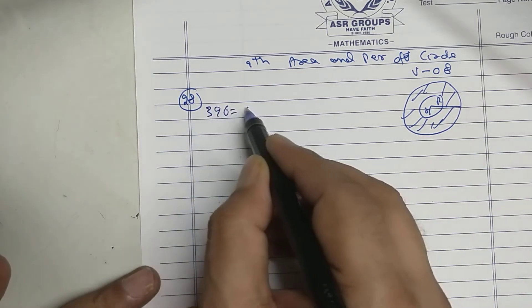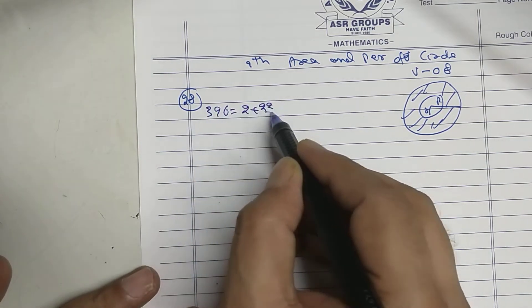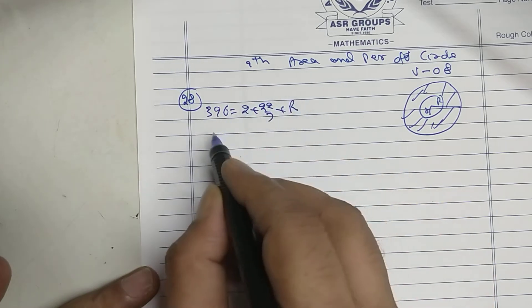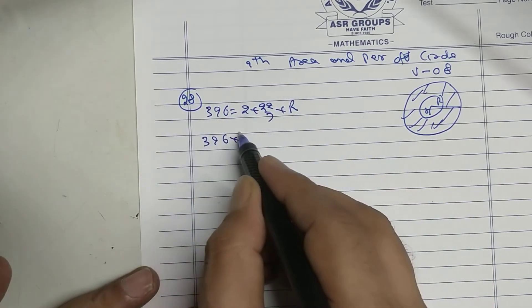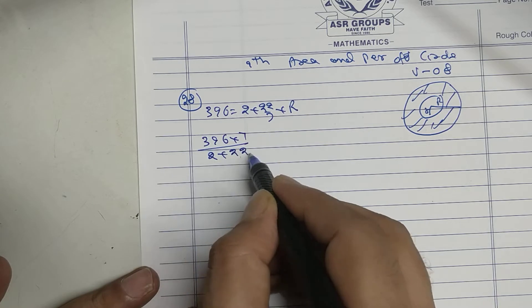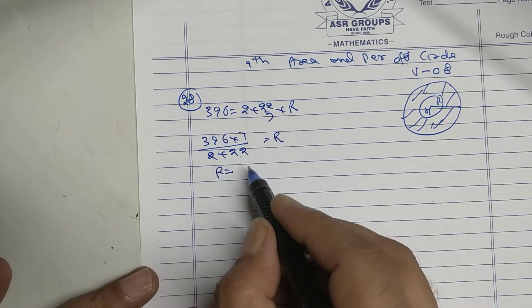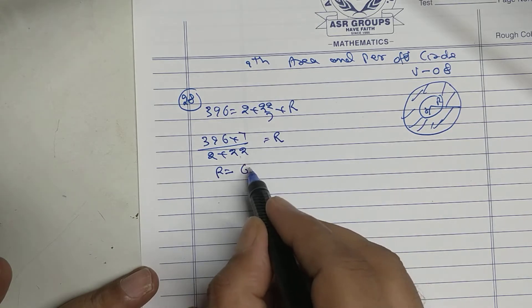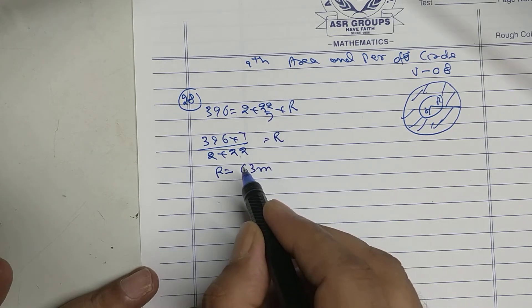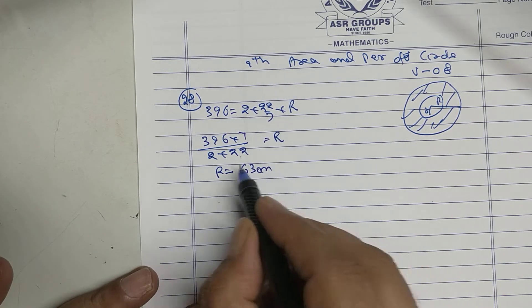396 equals 2 into 22 upon 7 into r. 396 into 7, 2 into 22 equal to r. So r equal to 63 centimeter.